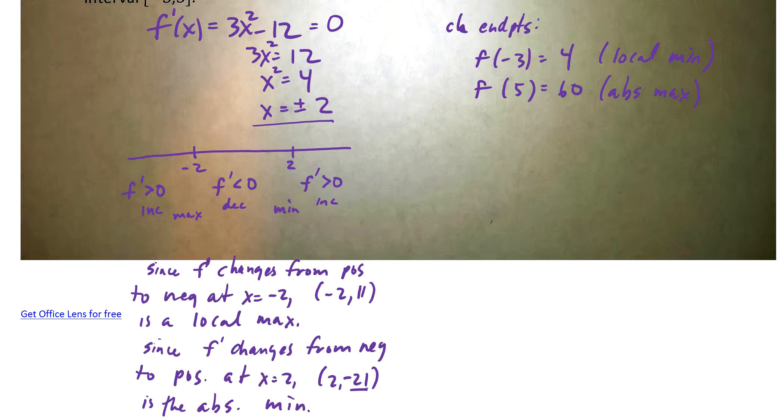So, if you want to look at the graph here, just to give you an idea. Again, you don't have to draw the graph, but it's helpful to see. Negative 3, negative 2, 2, and 5. At negative 2, I'm up here at 11. And I know I've got a max. At 2, I'm down here at negative 21, and I've got a min. And at 3, I'm here at 4. And at 5, I'm way up here at 60. So, I know that graph's got to do something like this, right? So, I've got my local min, local max, absolute min, absolute max.